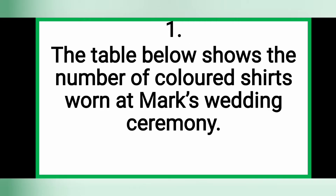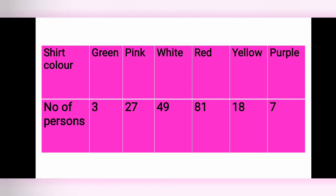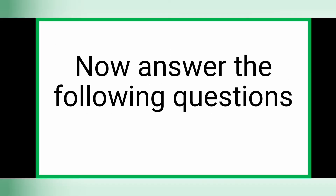Example one: the table below shows the number of colored shirts worn at Max's wedding ceremony. The table has two rows — the first row is for shirt color and the second row is for number of persons. For green: 3 persons; pink: 27 persons; white: 49 persons; red: 81 persons; yellow: 18 persons; and purple: 7 persons.